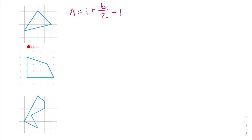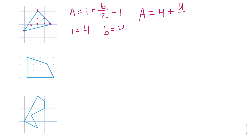We're going to start with this polygon here, which is a triangle. To use Pick's Theorem, we need to find the number of interior lattice points and lattice points on the perimeter. First, let's count how many lattice points are on the interior: 1, 2, 3, and 4. So i is equal to 4. And on the perimeter: 1, 2, 3, 4. So b is equal to 4, which means the area of our triangle is equal to 4 plus 4 divided by 2 minus 1, which is 5.